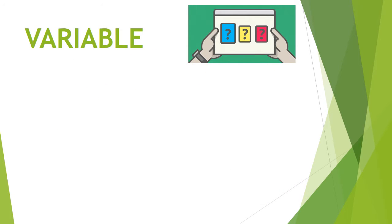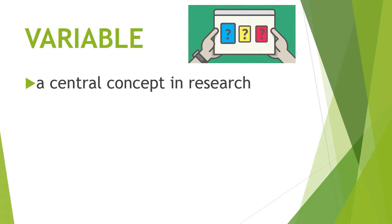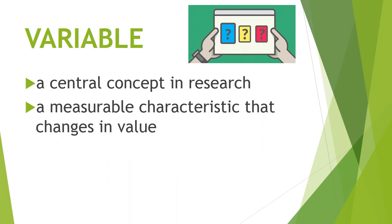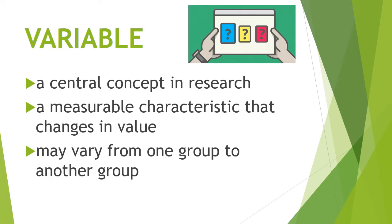How are we going to define a variable? Basically, it is a central concept specifically in quantitative research. It is also a measurable characteristic that changes in value, and it may vary from one group to another or from one person to another over time. From its root word 'vary,' which means change, a variable is something that can change its value — it is a concept of more than one value.